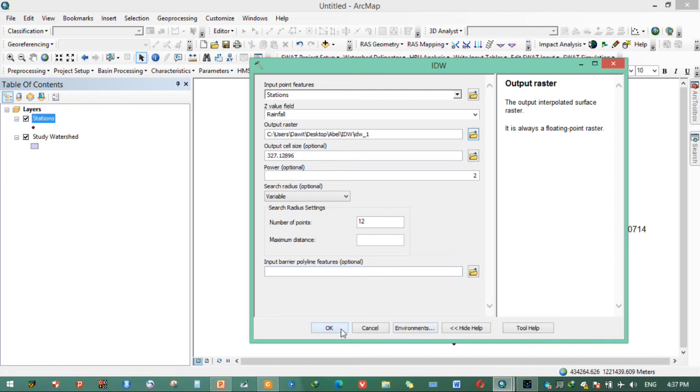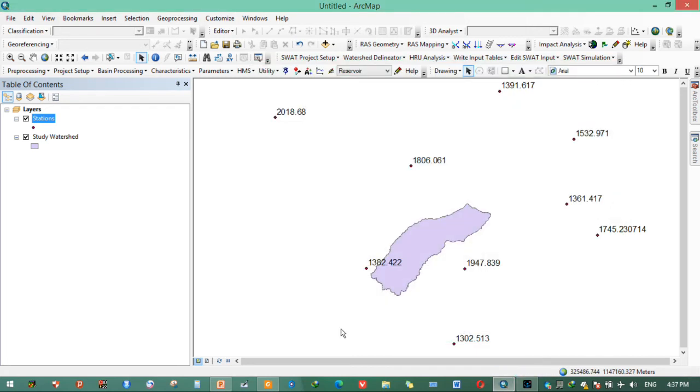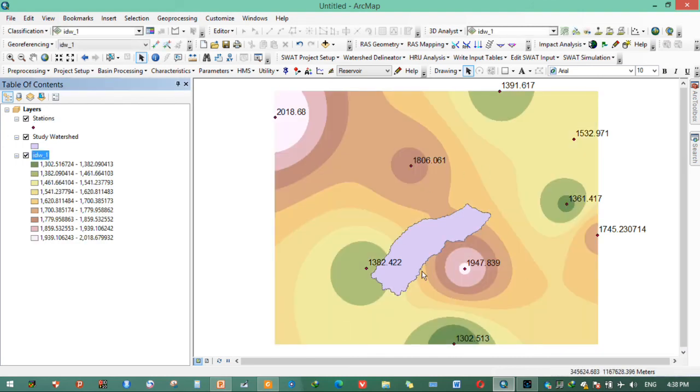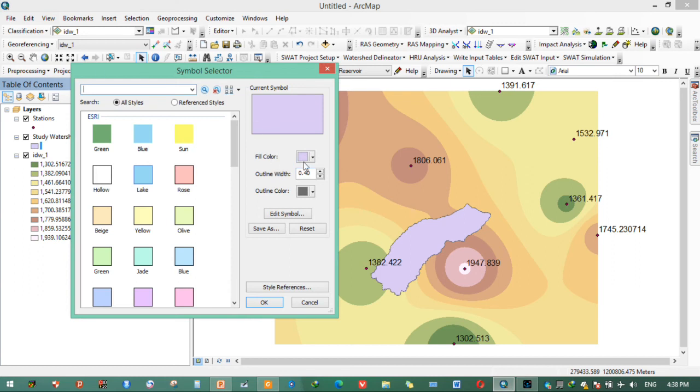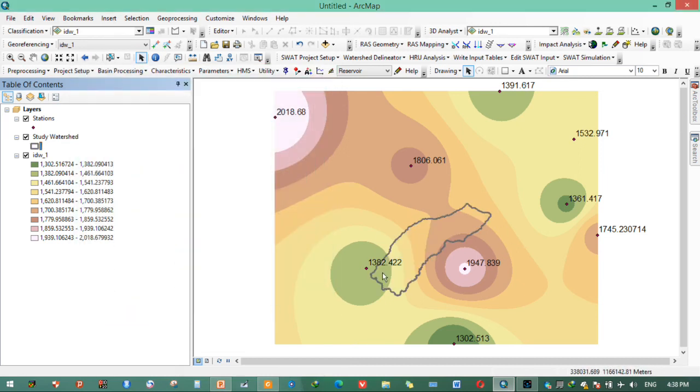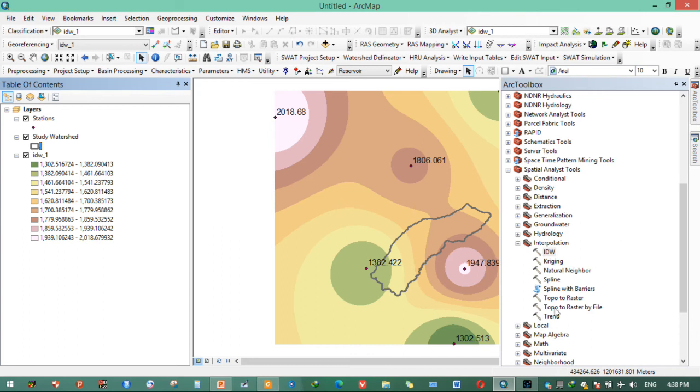It was here, okay. This is our watershed shape. This is the interpolated value. You can mask using this shape file.